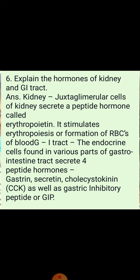The gastrointestinal tract secretes four major peptide hormones: gastrin, secretin, cholecystokinin, and gastric inhibitory peptide. Gastrin acts on the gastric glands and stimulates the secretion of HCl (hydrochloric acid) and pepsinogen. Secretin acts on the exocrine pancreas and stimulates the secretion of water and bicarbonate ions. Cholecystokinin acts on both the pancreas and gallbladder and stimulates the secretion of pancreatic enzymes and bile juice.